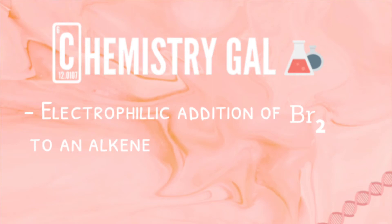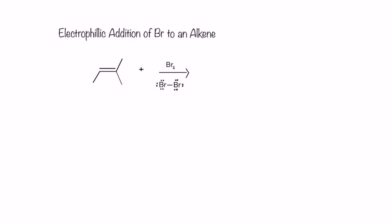Hi, it's ChemGal, and in this video we're going to go over electrophilic addition of bromine to an alkene. So let's get started by drawing the mechanism. Here I have laid out an alkene as well as a Br2 molecule. And we know that the best way to start off a mechanism is by asking ourselves who's going to be the nucleophile and who's going to be the electrophile.